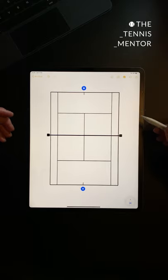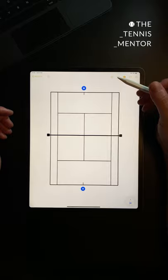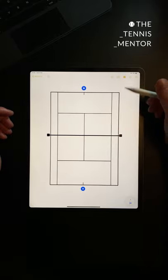It's commonly known as the 2-1 pattern, and in simple form, your aim is to hit to your opponent's weakness twice and then hit into the open court to finish the point. In this example, we're going to assume that both players are right-handed.